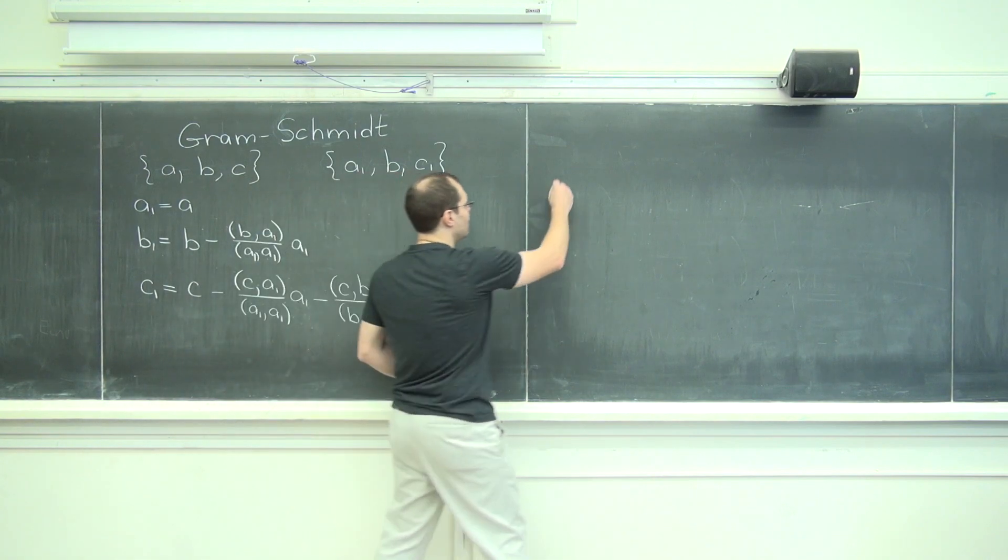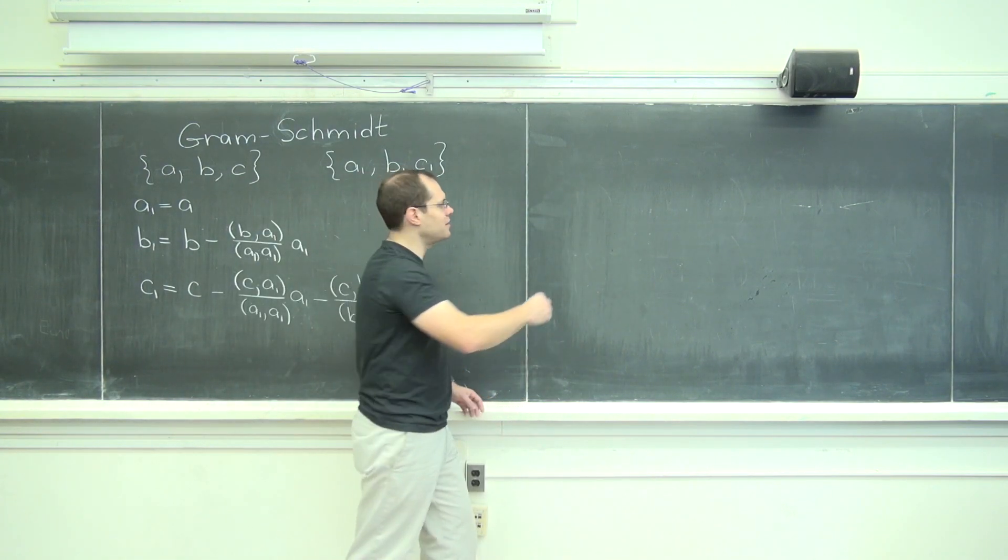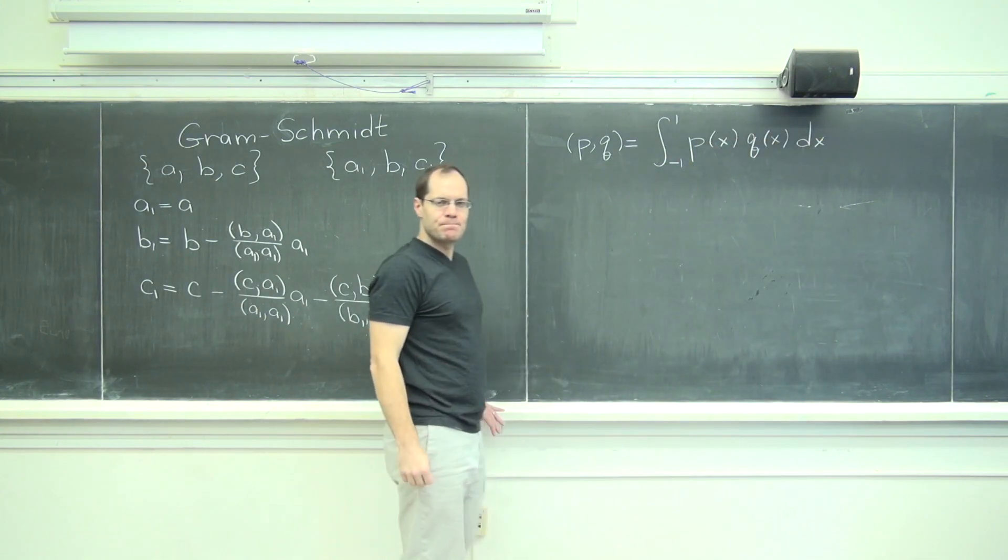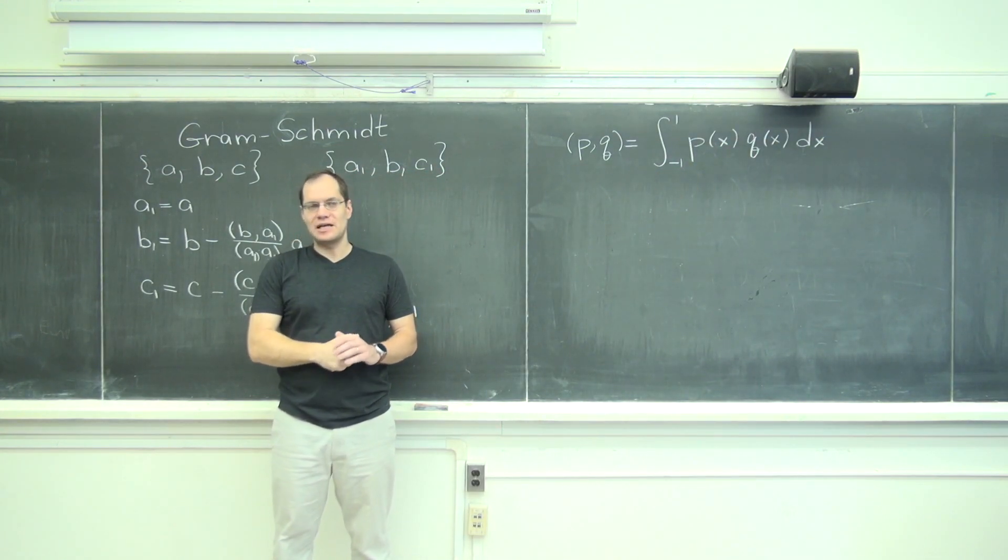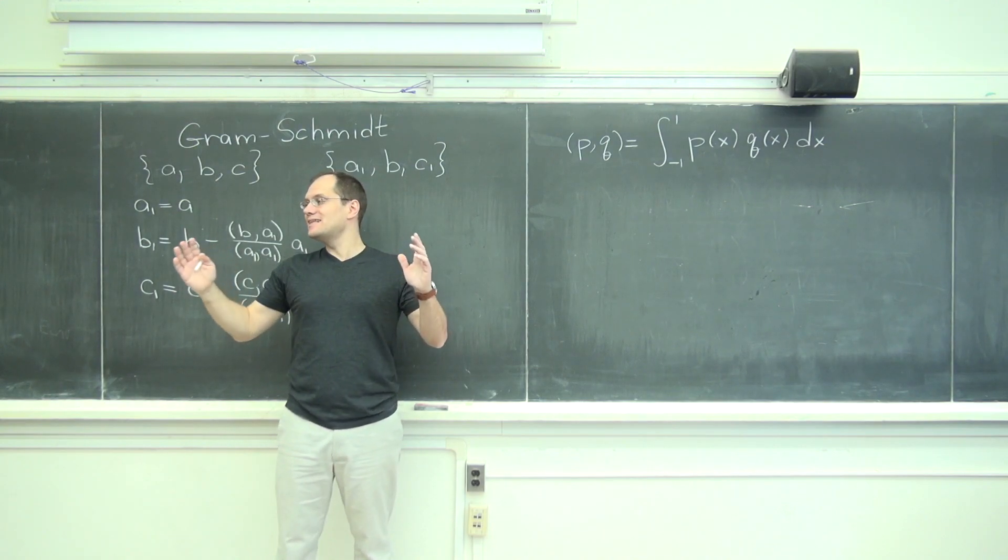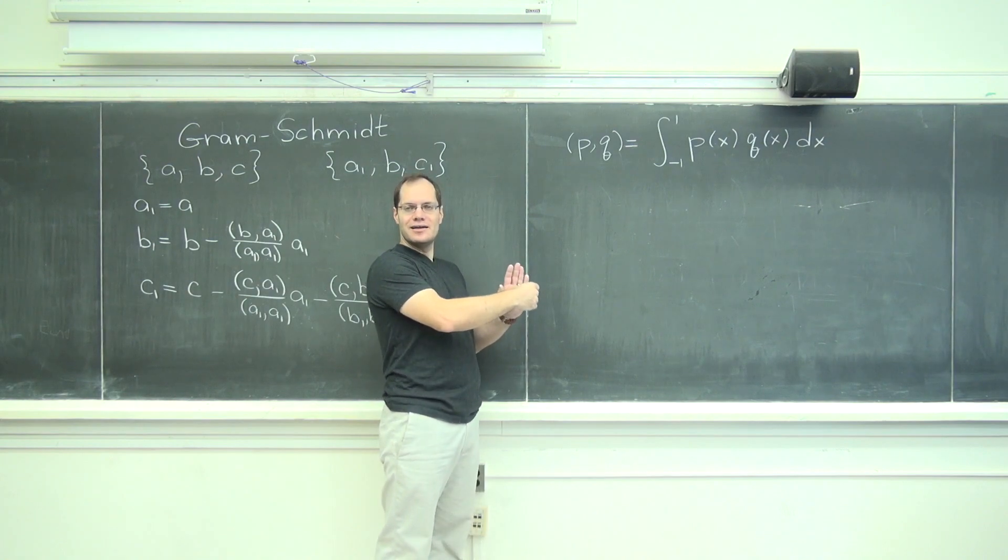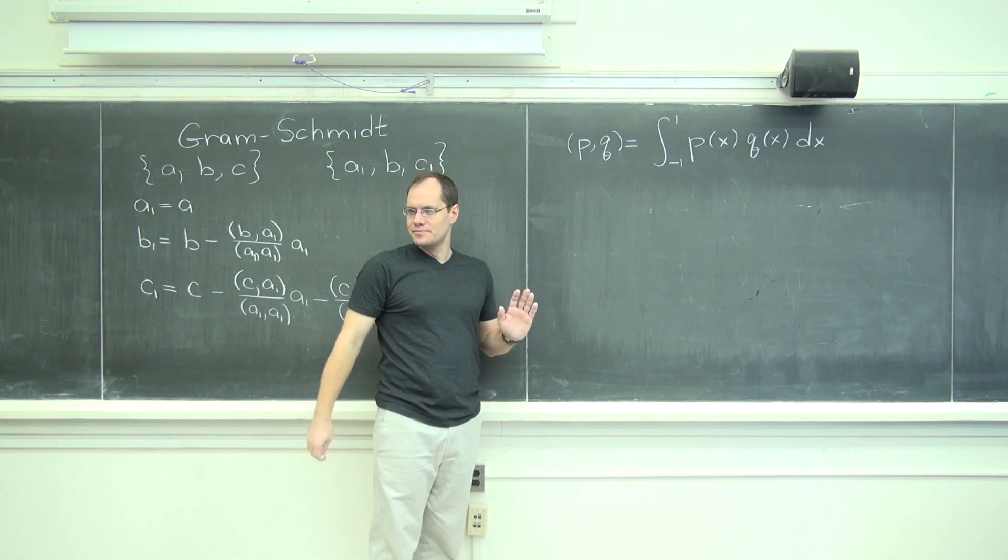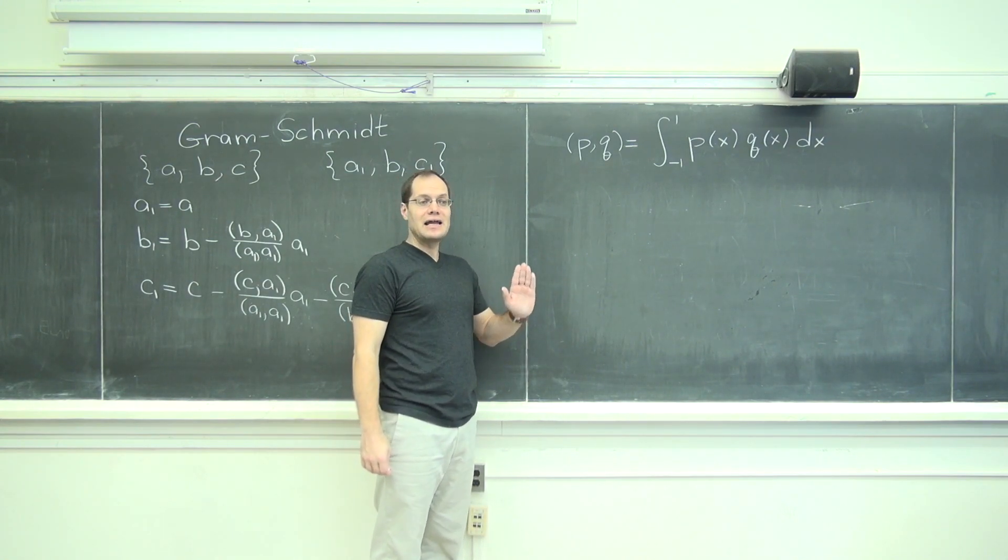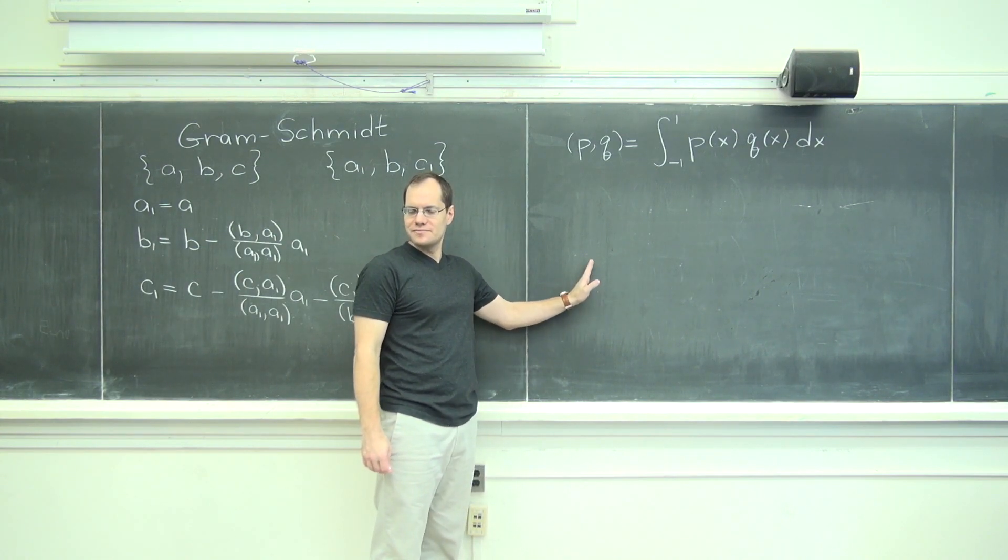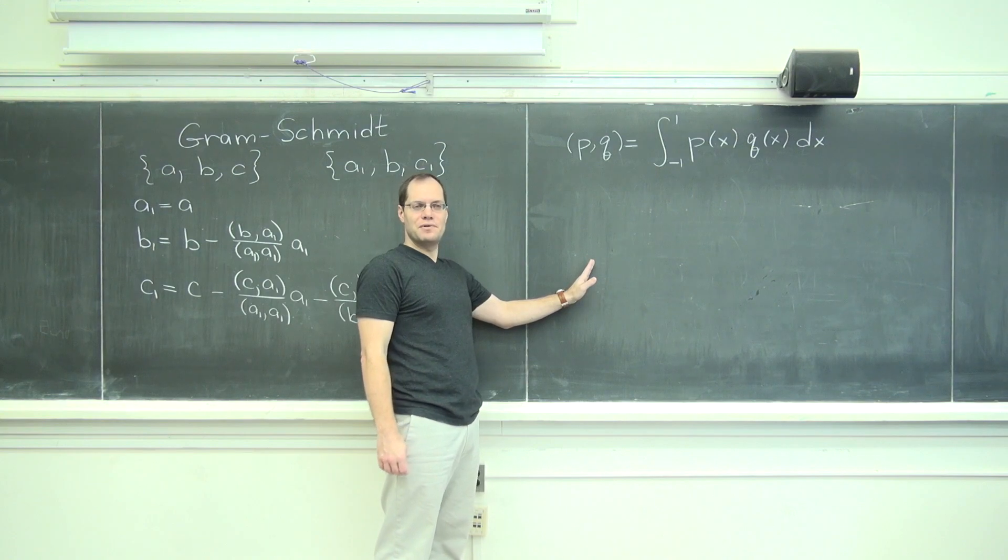We'll pick what's often called the standard inner product. Our initial basis that we'll start with that's not orthogonal will be 1, x, x squared. And I will also tell you, I've been looking forward to this moment, even though I've alluded to it before.